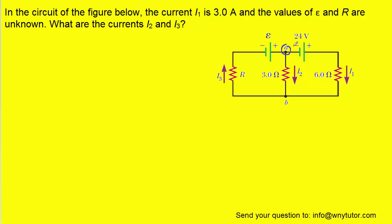What we're going to do is start from point A and move our way in this direction to point B. As we do that, we want to keep track of the potential changes. For example, when we encounter this battery right here, we would be moving from the negative to the positive terminal of that battery. In that case, we would have a positive potential change equal to 24 volts.